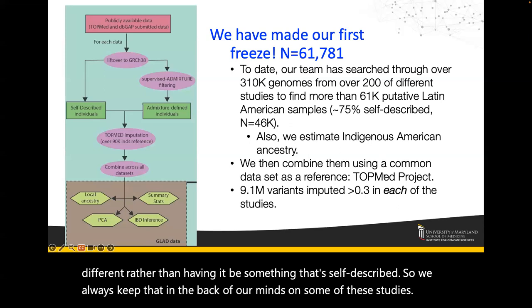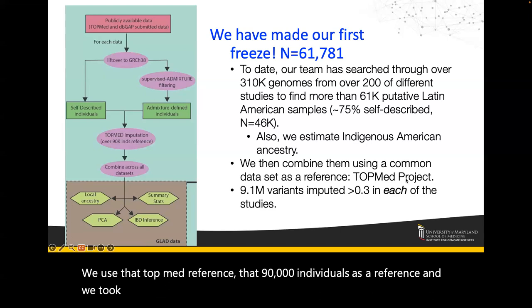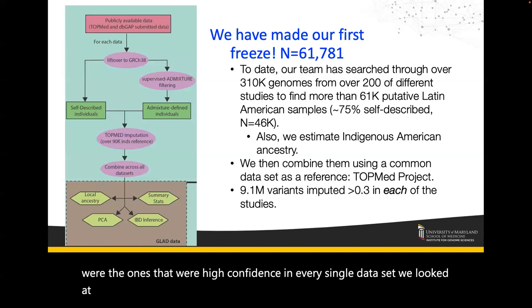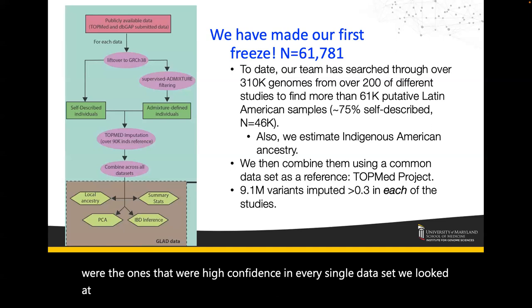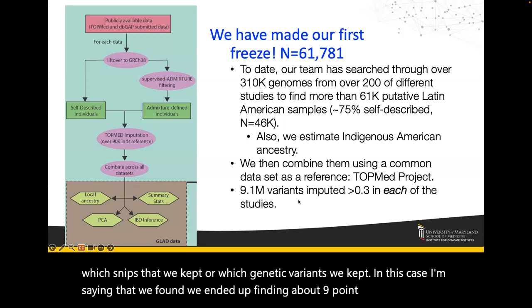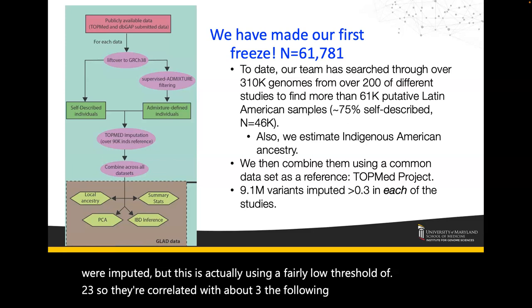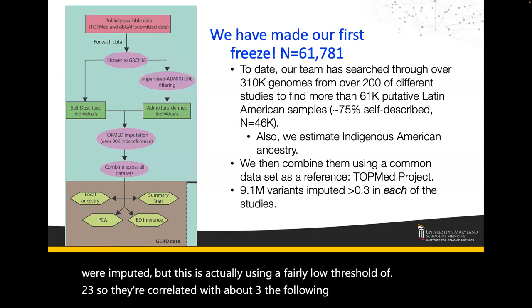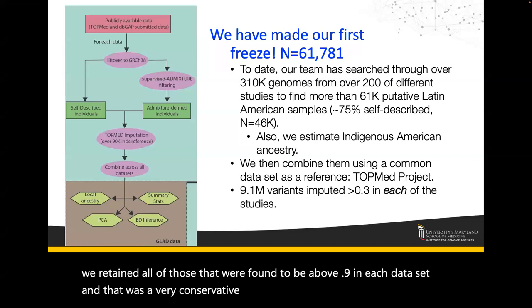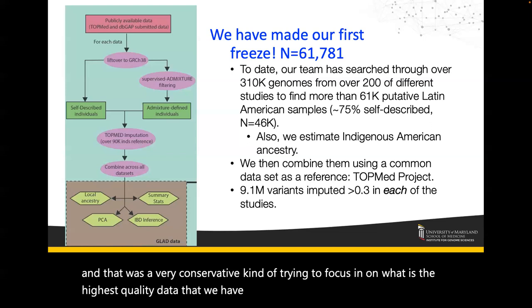We used the TOPMed reference of 90,000 individuals, took each individual dataset, and imputed it against TOPMed. When we got all the variation out, we only kept variants that were high confidence in every single dataset — if it was low quality in even one dataset, that variant was removed. We ended up with about 9.1 million imputed variants at a threshold of 0.3, but the following analyses used only those above 0.9 in each dataset — very conservative, focusing on the highest quality data.